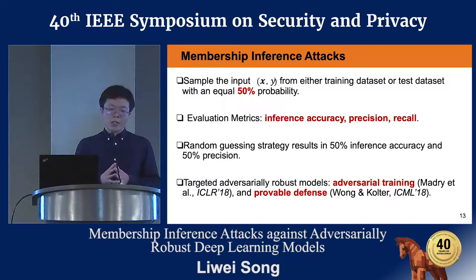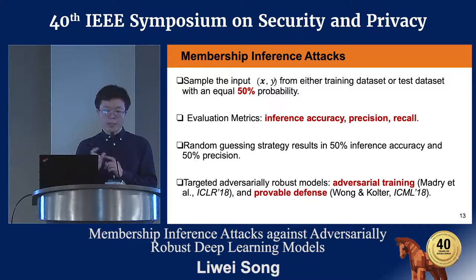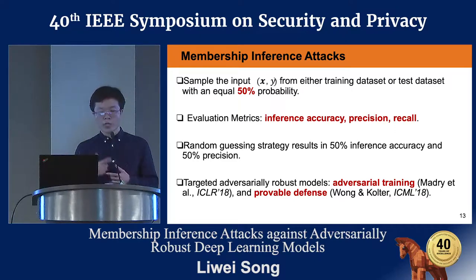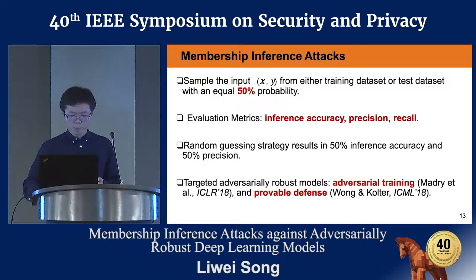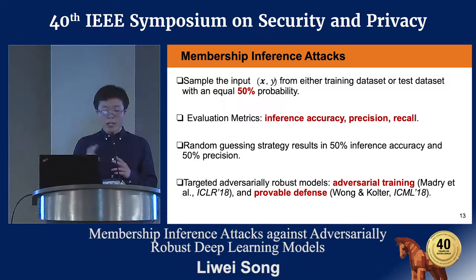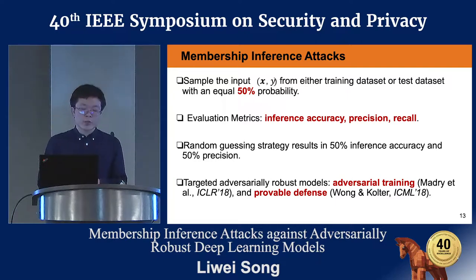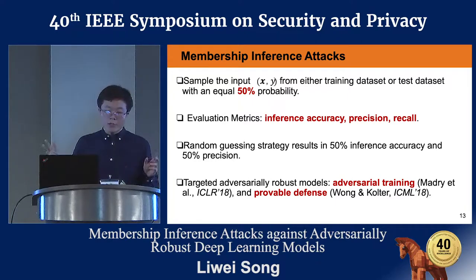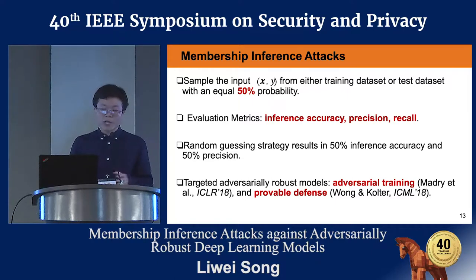Because we sample inputs from training or test data with equal 50% probability, a random guessing strategy gives 50% inference accuracy and 50% inference precision. We chose two defense methods proposed against adversarial examples: adversarial training proposed by Madry et al., and provable defense proposed by Wong and Kolter.